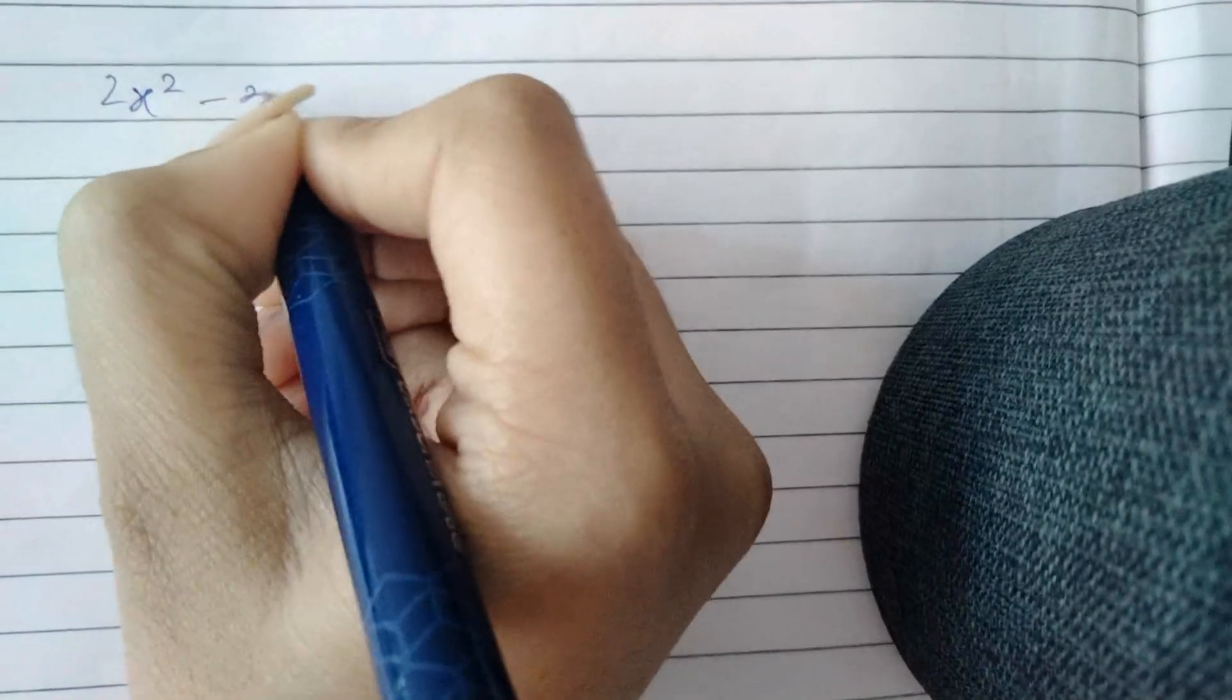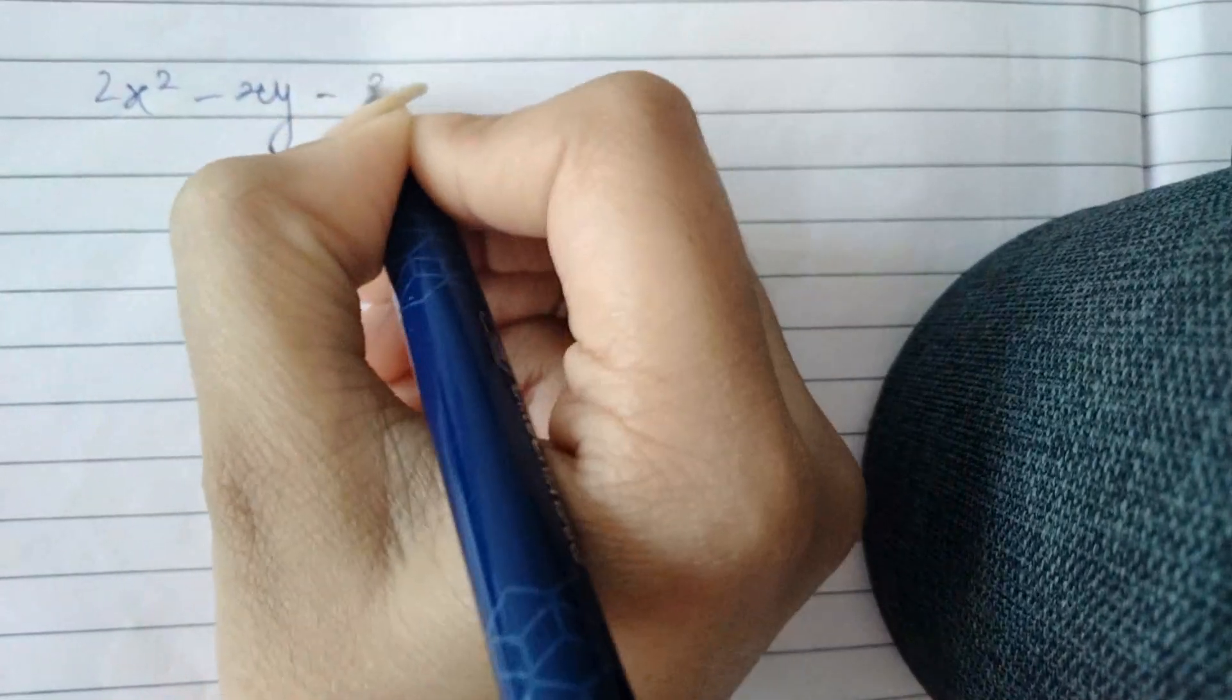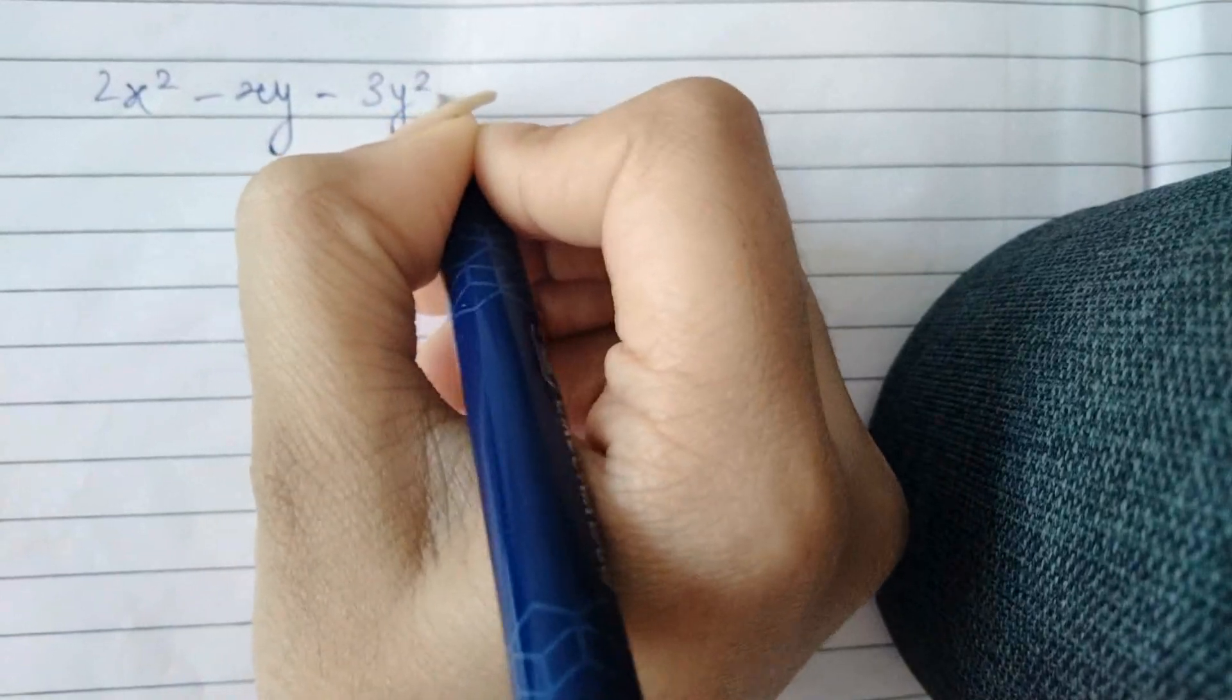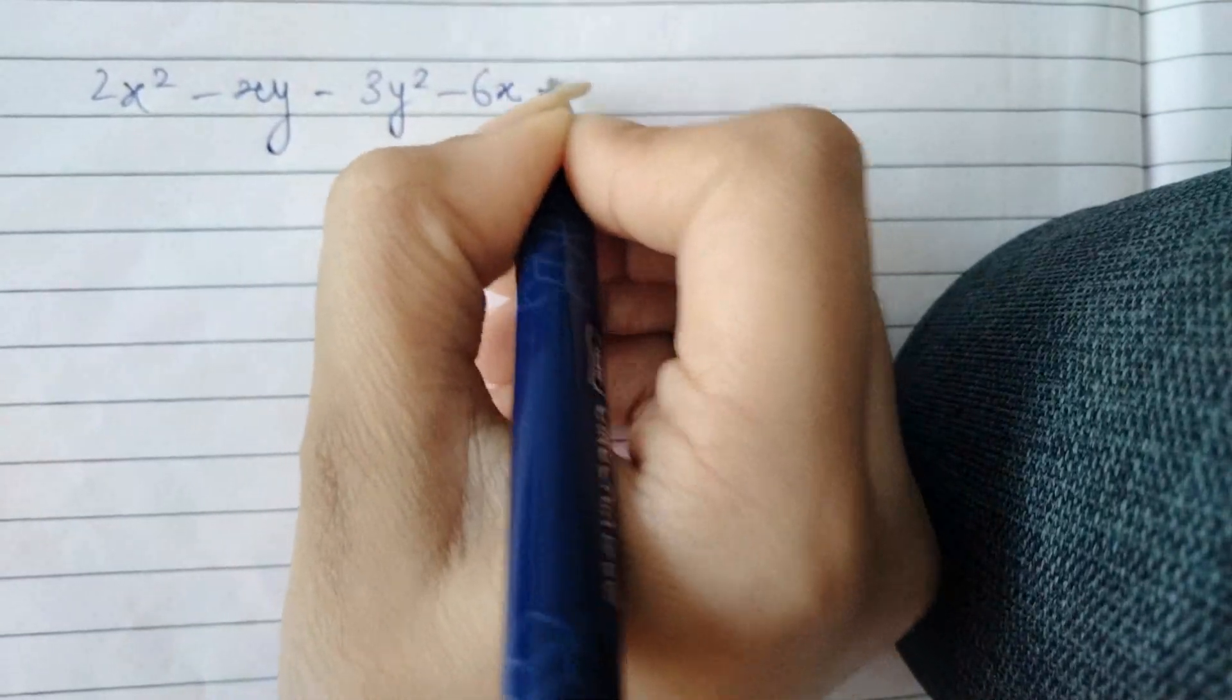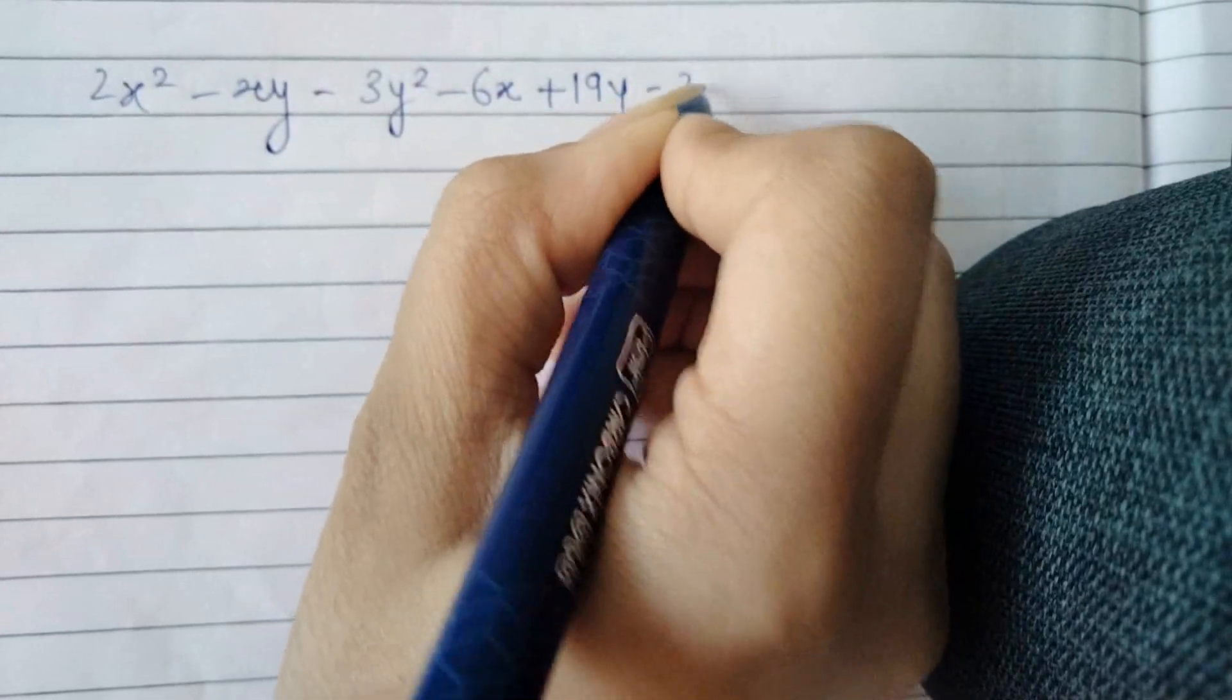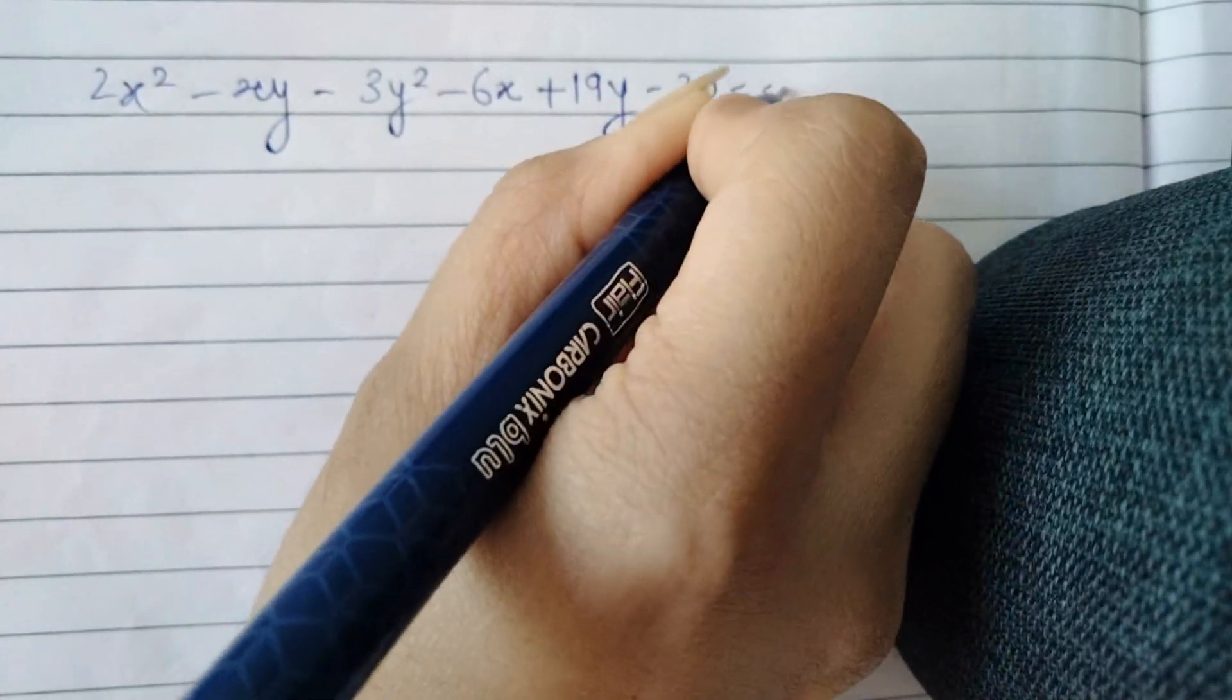So the pair of lines given to us is 2x² - xy - 3y² - 6x + 19y - 20 = 0.